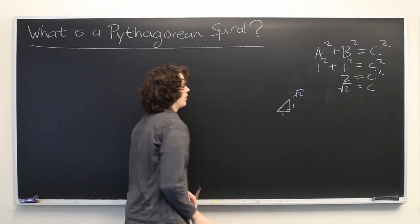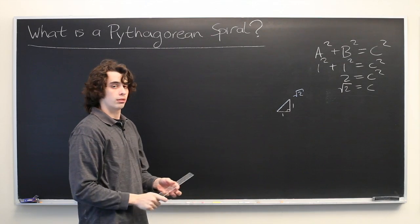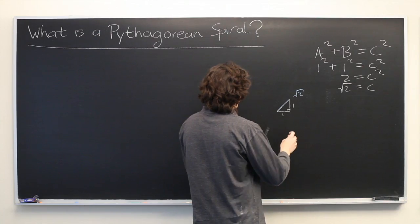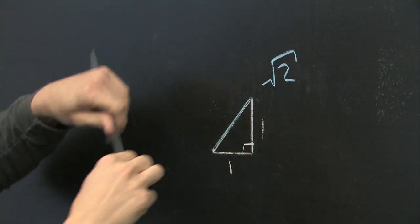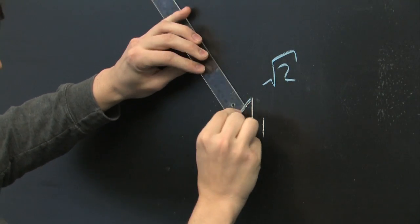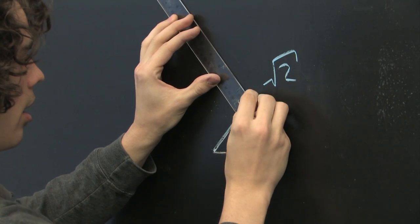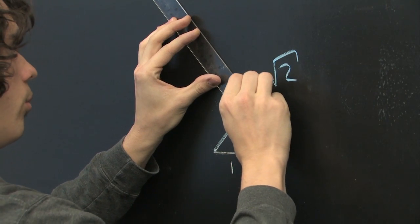Okay. So that's the foundation of the Pythagorean spiral. Construction is a little bit more interesting. From this upper right corner here, what we're going to do is make a right angle with our hypotenuse and then measure up one unit.